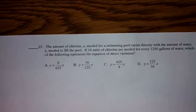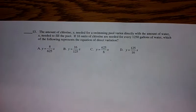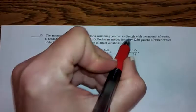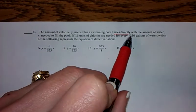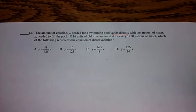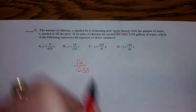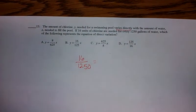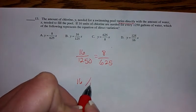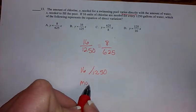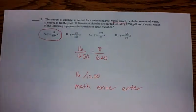Number 13, the last one, says the amount of chlorine y needed for a swimming pool varies directly with the amount of water x needed to fill the pool. Varies directly. That's important. Where did that go? It varies directly. That means that our y intercept will be 0. If 16 units of chlorine is needed for every 1,250 gallons of water, which of the following represents the equation for the direct variation? So I've got 16 over 1,250. And if I go to reduce that, if I divide each one of them in half, I have 8 over 625. You can also put 16 divide 1,250 in your graphing calculator. Press math and enter and enter and it will reduce the fraction for you and you will find that this will be your answer.